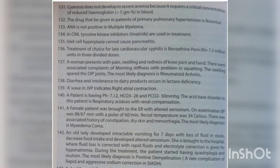Cyanosis does not develop in severe anemia because it requires a critical concentration of reduced hemoglobin — less than 5 gram percent or greater than 5 gram percent in blood. The drug to be given in a patient of primary pulmonary hypertension is bosentan. ANA is not positive in multiple myeloma. In CML, tyrosine kinase inhibitors such as imatinib are used in treatment.